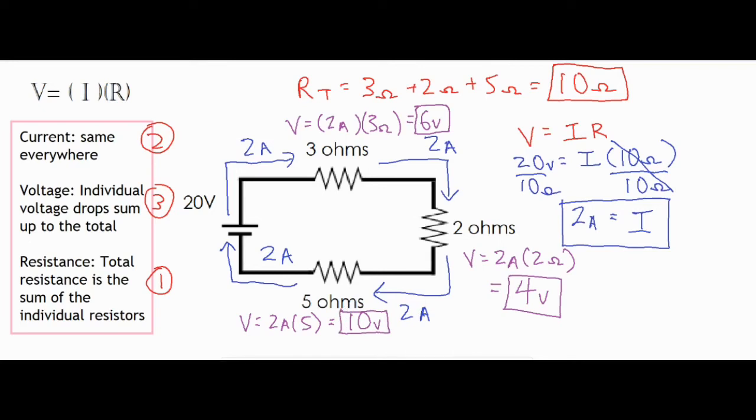Okay, so I multiplied my current and resistors. And the product of those numbers gives me my voltage drop through each one of the resistors, and I got 6 volts, 4 volts, and 10 volts.